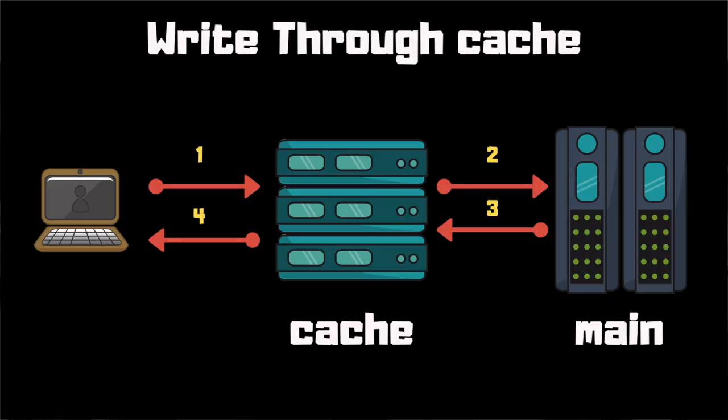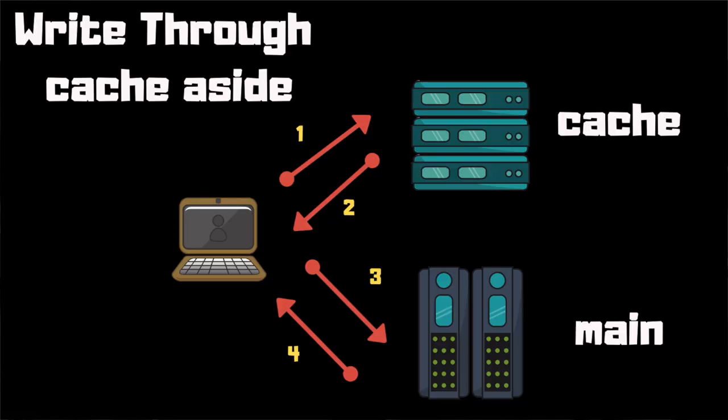There are two main strategies for writes in distributed caching. The first is write-through cache. AWS has a variant sometimes called cache-aside, where the application is aware of both the cache and the data store — it writes to the cache and also writes to the data store at the same time.